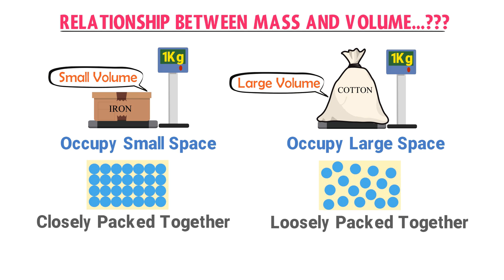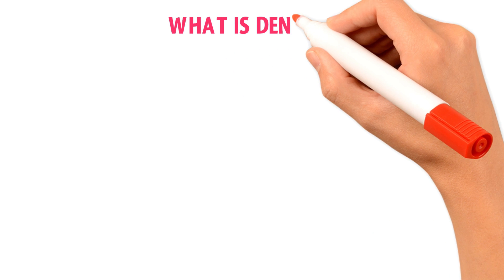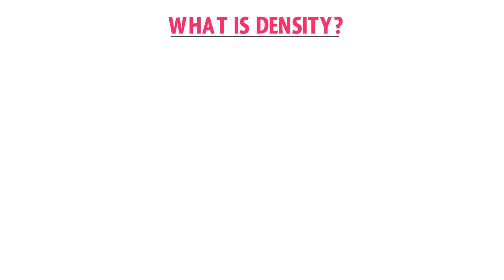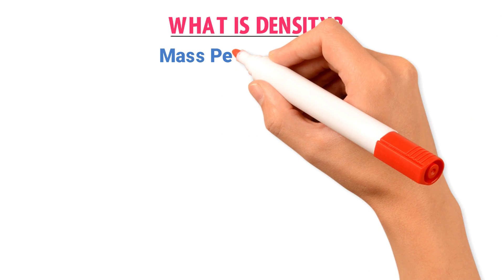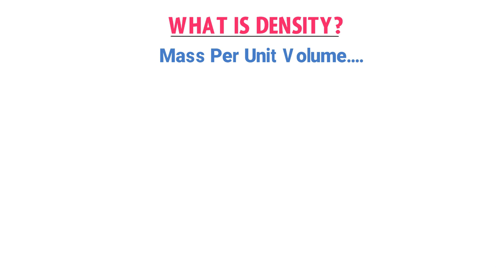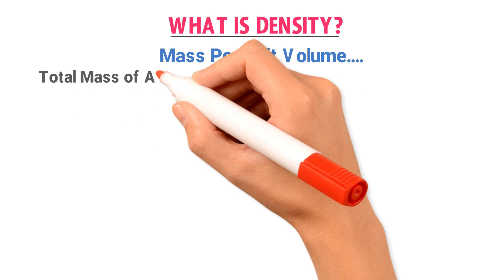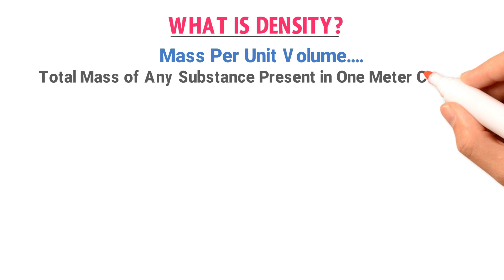Now, what is density? The definition of density is mass per unit volume. Or you can define density as the total mass of any substance present in 1 cubic meter.